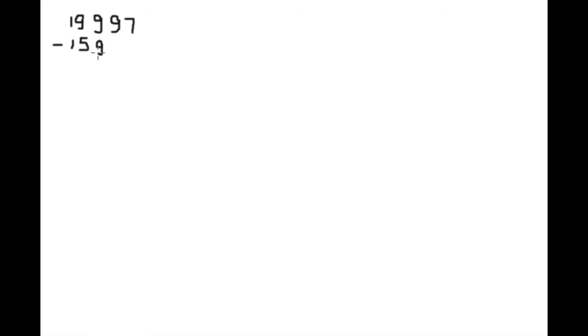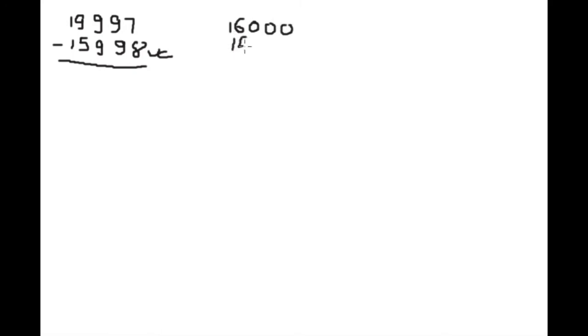Nineteen thousand nine hundred ninety-seven subtract fifteen thousand nine hundred ninety-eight. First we will see which number is smaller — this one, fifteen thousand nine hundred ninety-eight. The nearest whole number to it is sixteen thousand, and sixteen thousand is two more than the actual number.